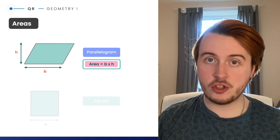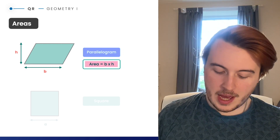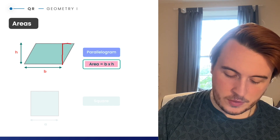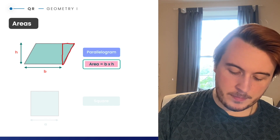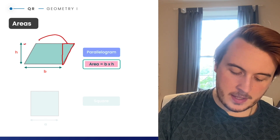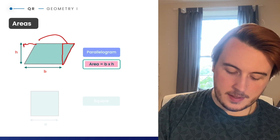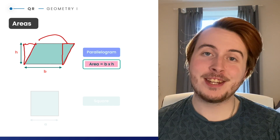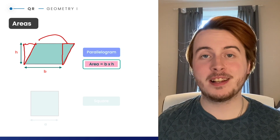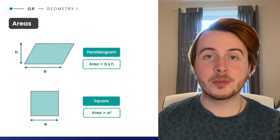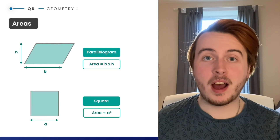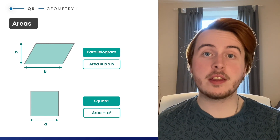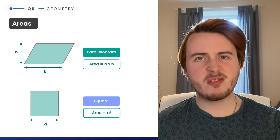If you're wondering how that formula works because of the slanted edge, it's helpful to think of taking that jutting-out bit and moving it to the other side — it makes a beautiful rectangle. So it does work, and it's specifically for parallelograms that we can use this formula.